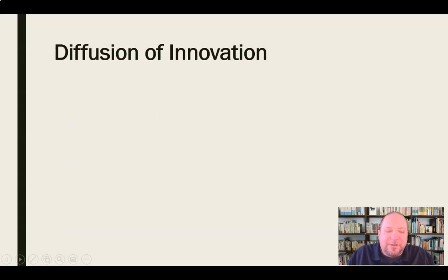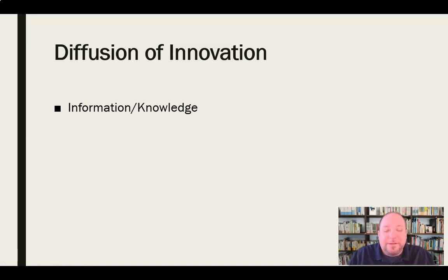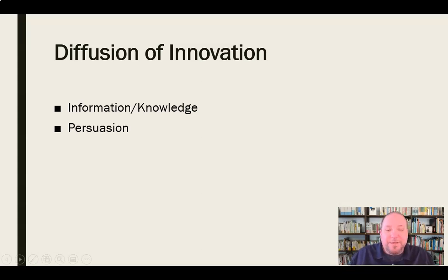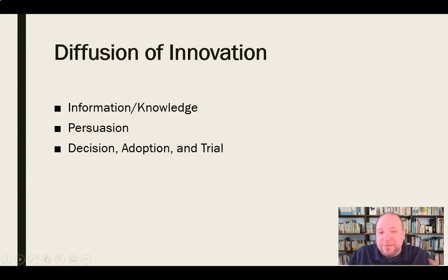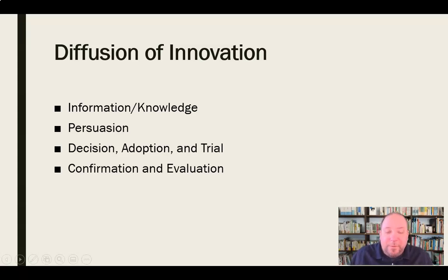Diffusion of innovation can cross all three types of campaigns. There are a few stages: the first is information or knowledge — we need to make people aware of the situation, product, or politician. Then we engage in persuasion, trying to persuade them why our side of things is correct. Next is the decision, adoption, and trial stage — people are making decisions, adopting our persuasive efforts, and trying things out to see if they fit. Finally, confirmation and evaluation is where people get locked in to a certain product or idea.